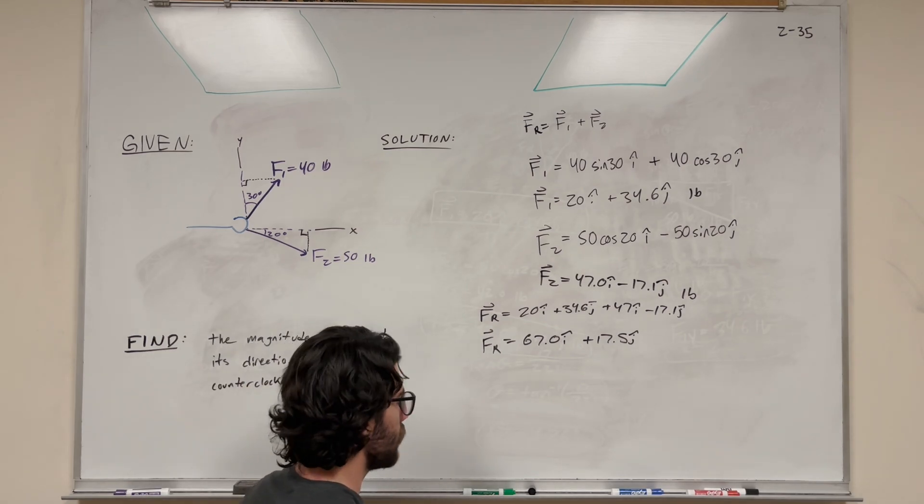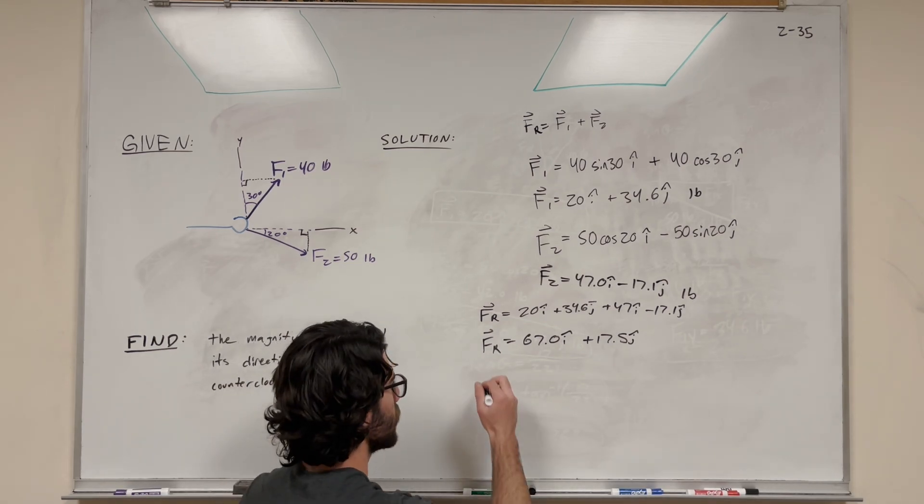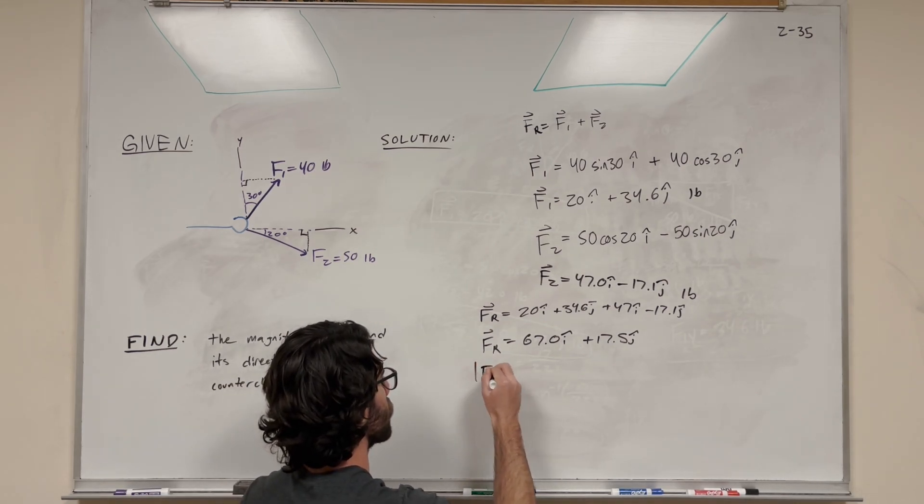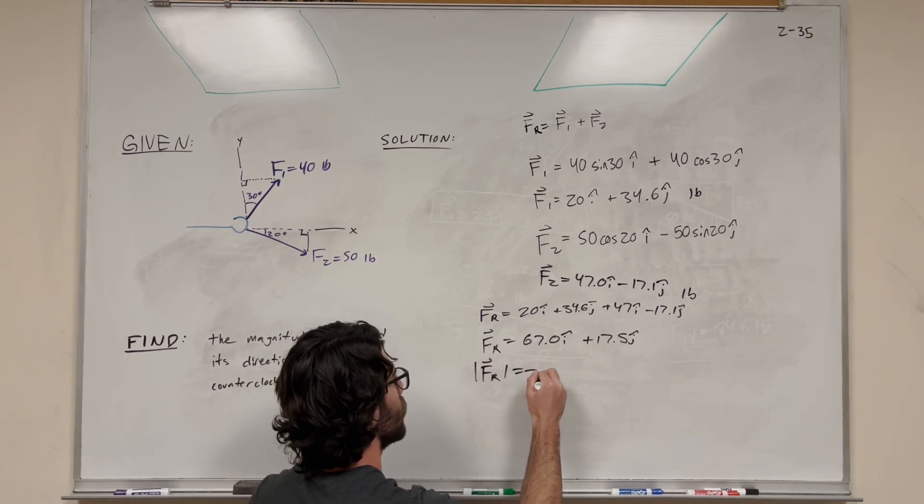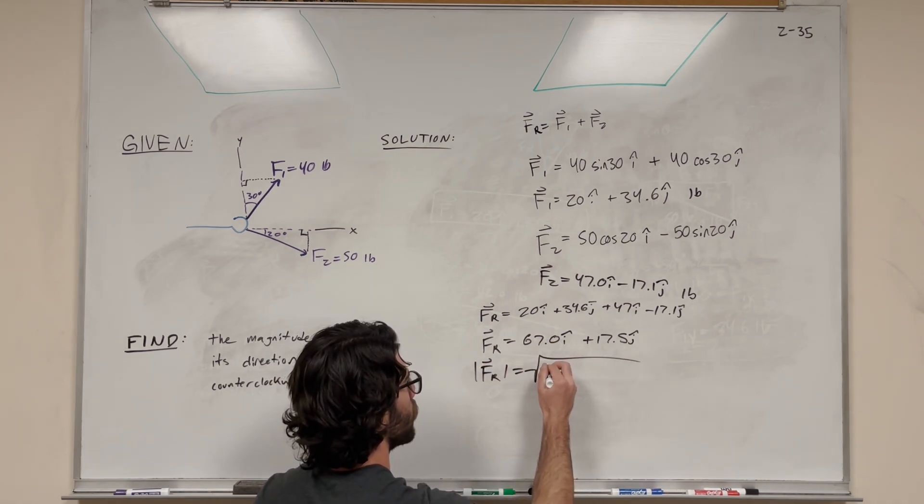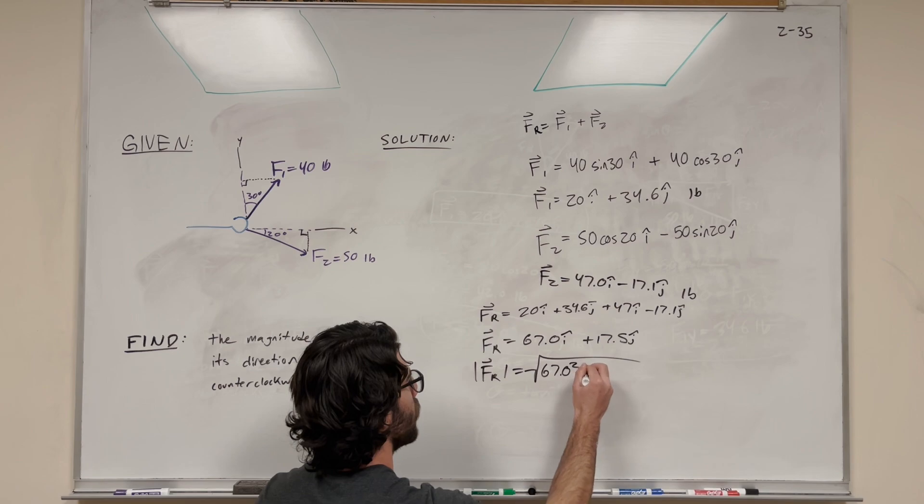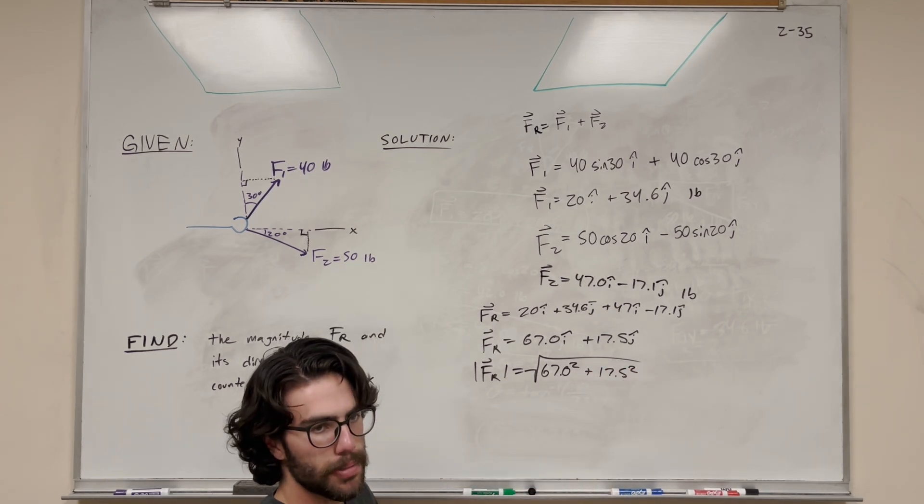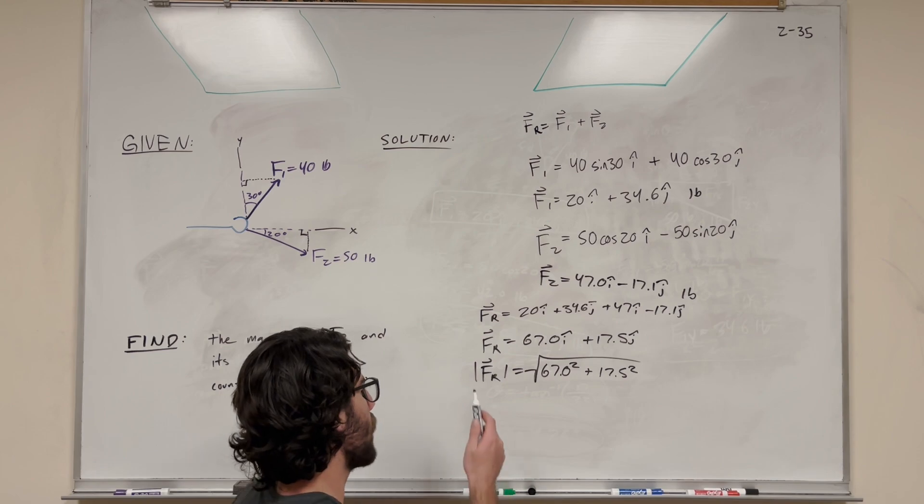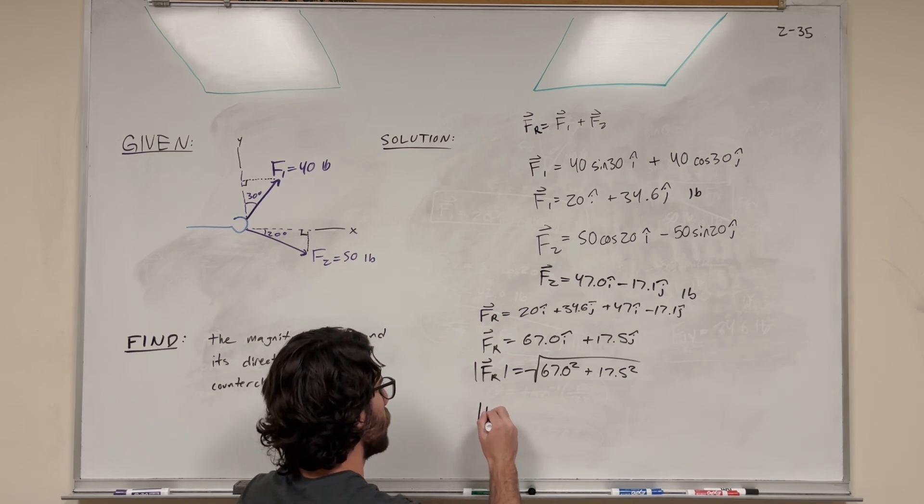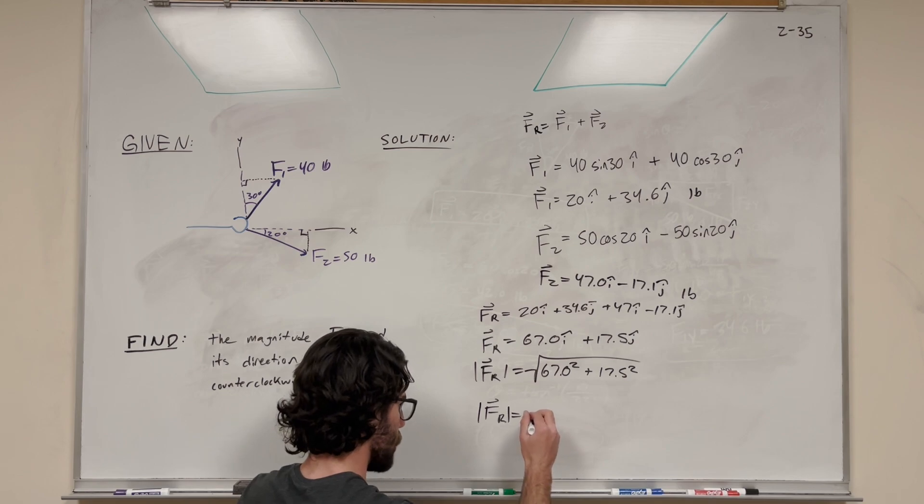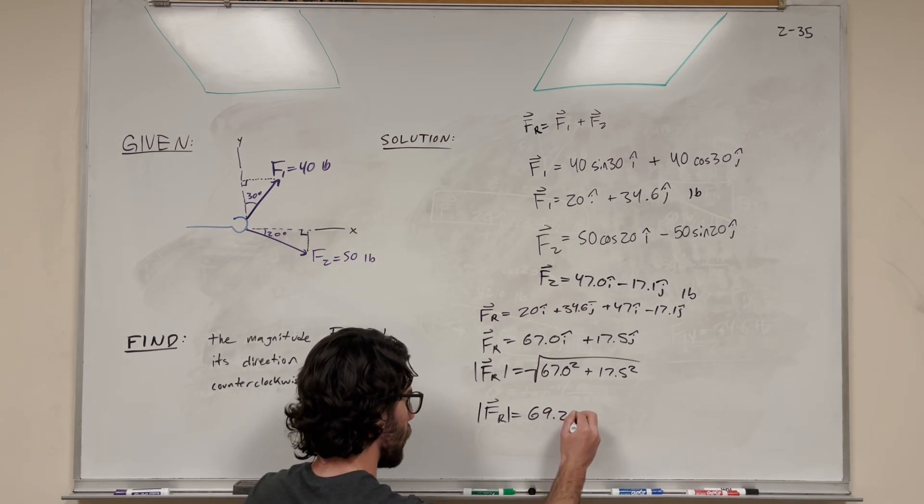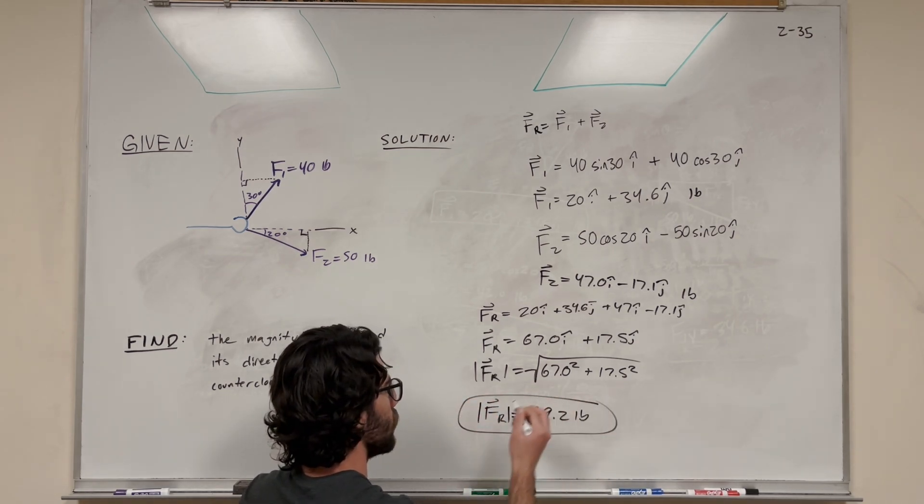So then if we want to find the magnitude of this, when we're finding magnitude, we're going to take the square root of the x component squared, so 67 squared plus 17.5 squared. This is just a squared plus b squared equals c squared. This is just finding the magnitude of the hypotenuse. Then we solve this, and you get 69.2 pounds is the magnitude of this vector.